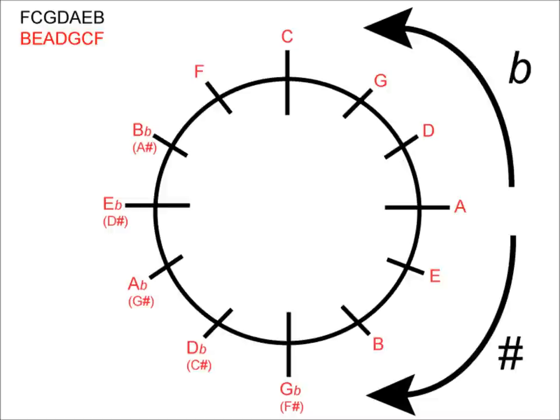Let's try G sharp minor. As there is a sharp in its name, we know that we have to travel around the sharp side of the circle. So let's count again starting at A: E is one notch away from A, B is two notches, F sharp is three, C sharp is four, G sharp is five. Therefore we can say that G sharp minor has five sharps in its key signature.